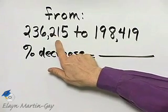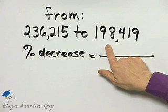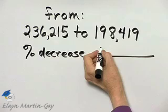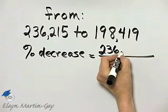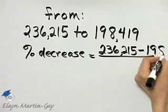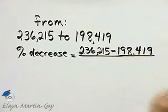If you take 236,215 and subtract 198,419, you'll have a difference of, now let me write this down for you. Minus 198,419, which we'll find that decrease,